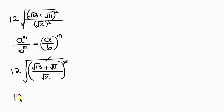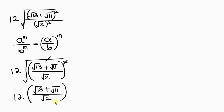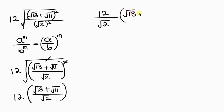So we have 12 times the square root of 13 plus the square root of 11, all over the square root of 2. I'm going to push out the square root of 2 outside, giving 12 divided by the square root of 2, times the square root of 13 plus the square root of 11.